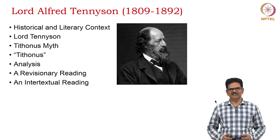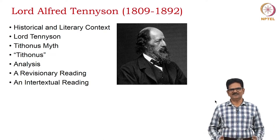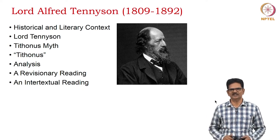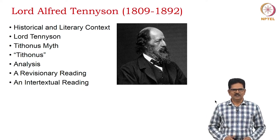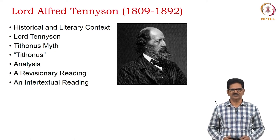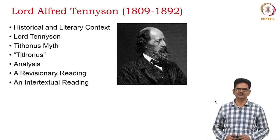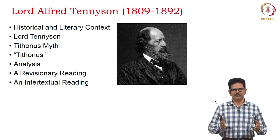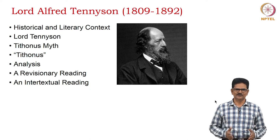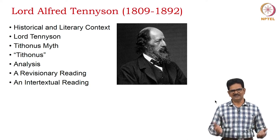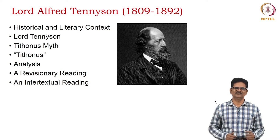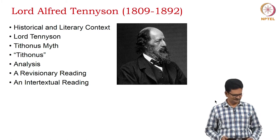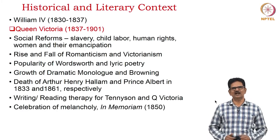The first Victorian poet we want to discuss is Lord Alfred Tennyson, born in 1809 and died in 1892. We will see the historical and literary context in which Lord Tennyson wrote his poems, paying attention to his poem Tithonus. We will understand Tithonus' myth, analyze the poem, and offer two readings: a revisionary reading and an intertextual reading.